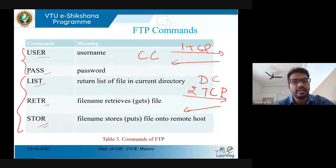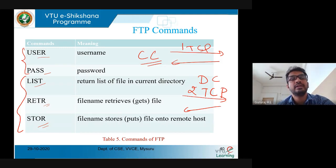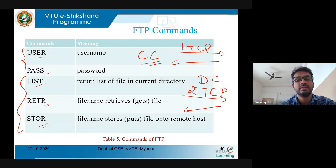The control connection is used for authorization and exchanging basic information between client and server — including which port number the client or server will listen on. All data fetching, data transfer, data retrieving, and file listing operations are handled through the data connection.